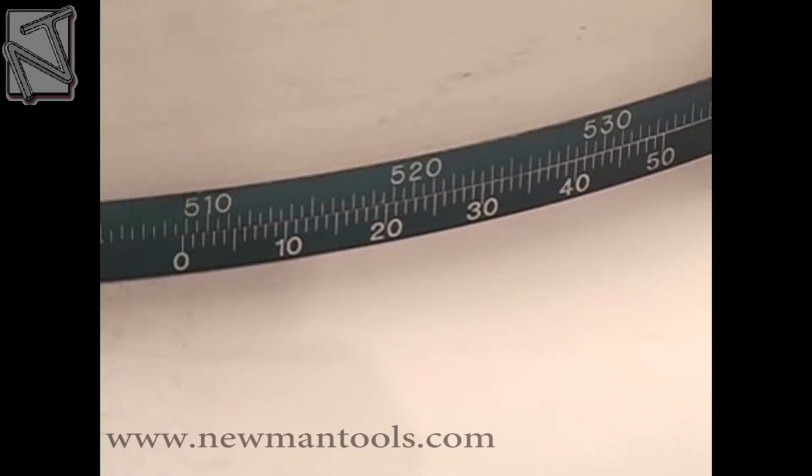Next, observe the veneer scale's value at the point where it lines up exactly with a marked division line on the gauge scale. In this example, the value is 37.